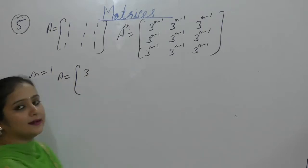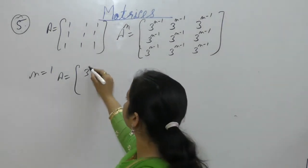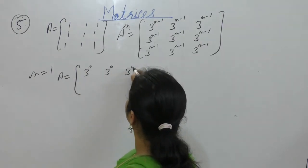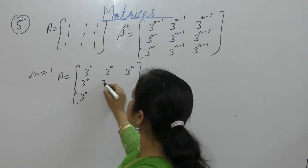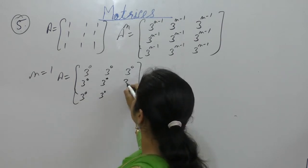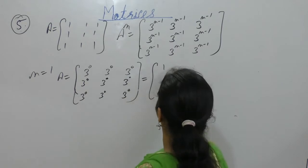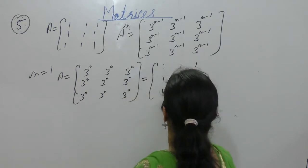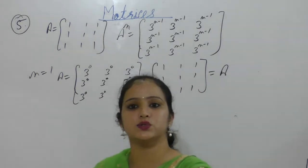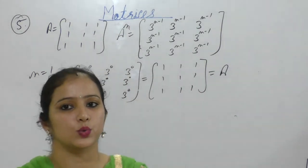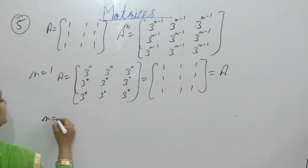For n equals 1: 1 minus 1 is 0, and something raised to power 0 is 1, that equals A. So the result is 2 for n equals to 1.